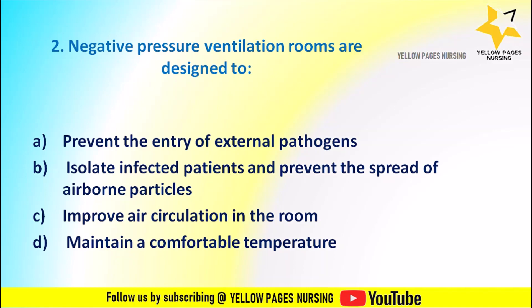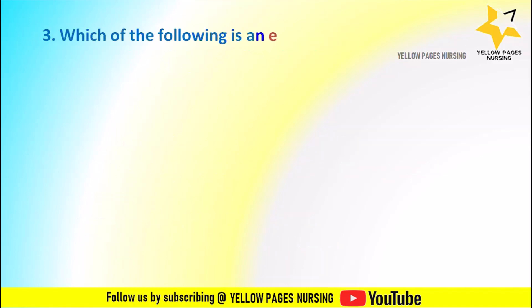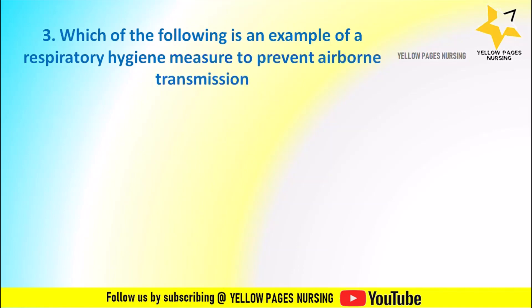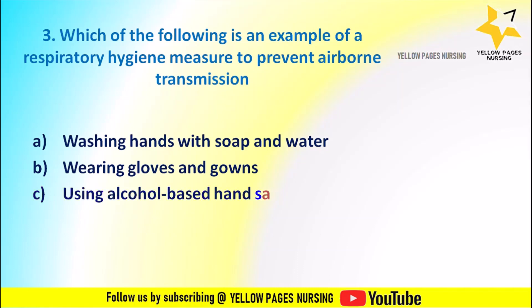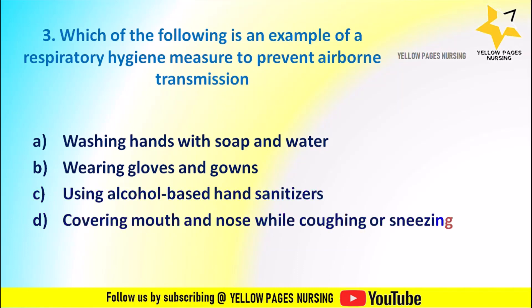Question 3: Which of the following is an example of a respiratory hygiene measure to prevent airborne transmission? Options: A. Washing hands with soap and water, B. Wearing gloves and gowns, C. Using alcohol-based hand sanitizers, D. Covering mouth and nose while coughing or sneezing.